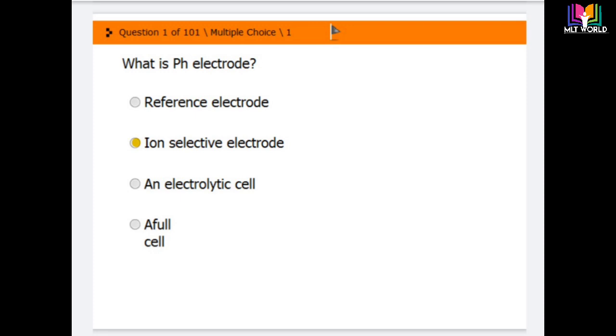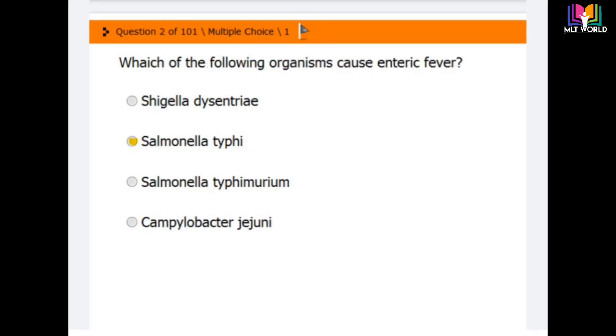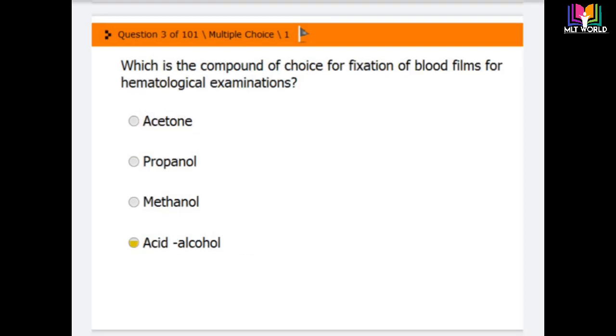Now we will move to the second question. Which of the following organism causes enteric fever? Options are Shigella dysenteriae, Salmonella typhi, Salmonella typhimurium, and Campylobacter jejuni. The correct answer is the second option: Salmonella typhi is the organism that can cause enteric fever.